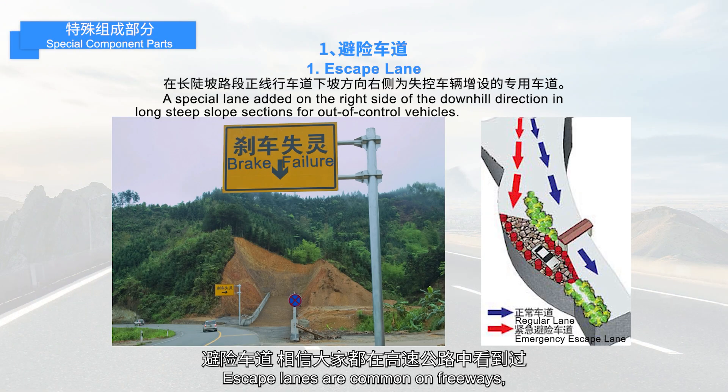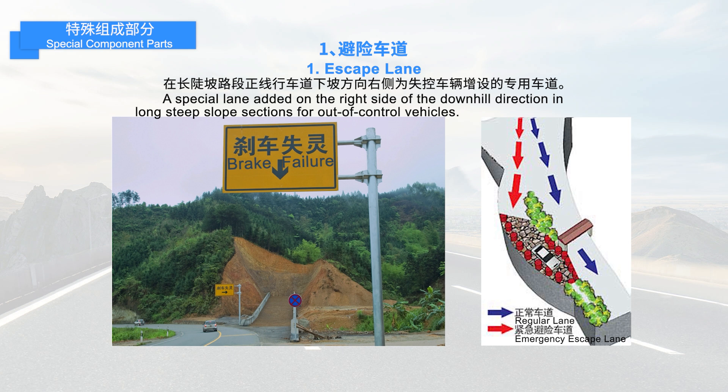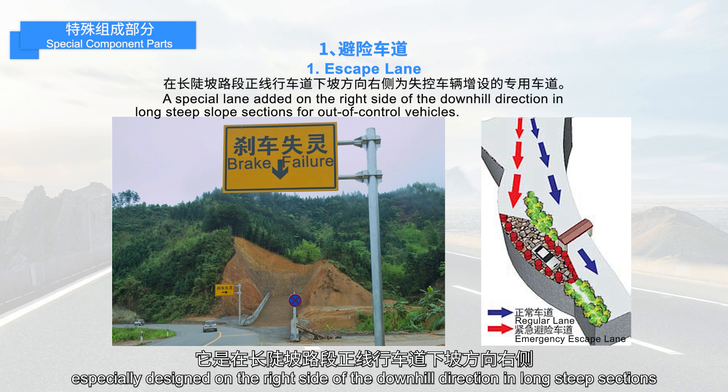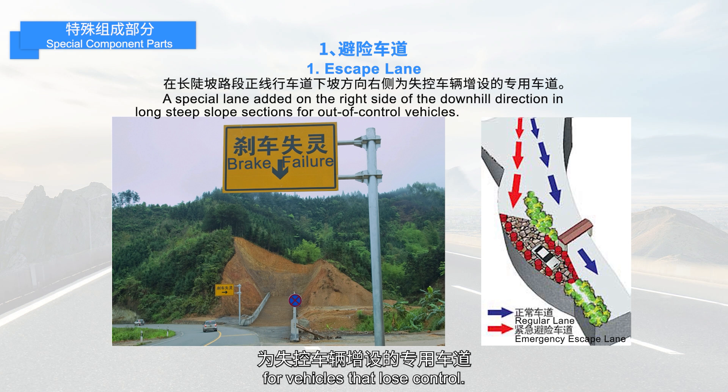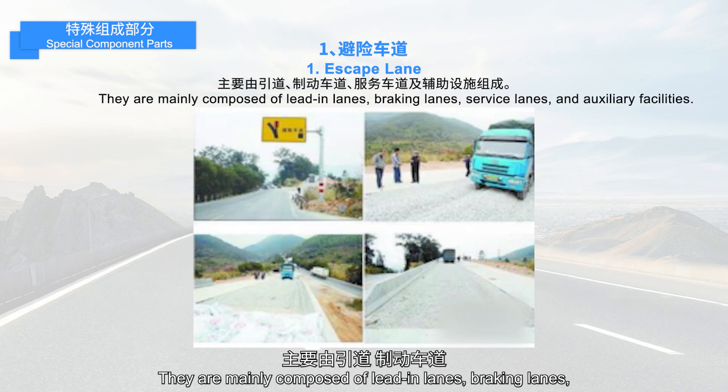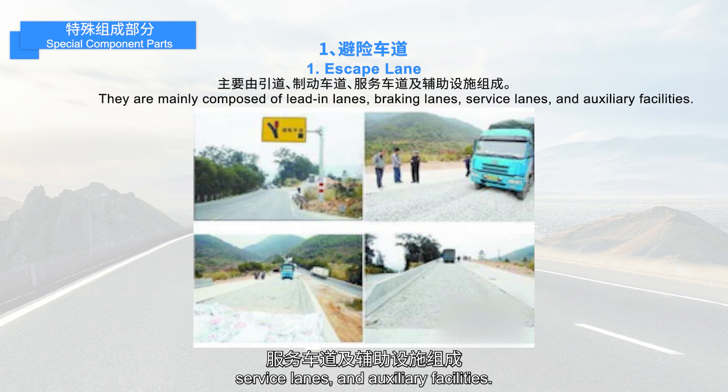Escape lanes are common on freeways, especially designed on the right side of the downhill direction in long steep sections for vehicles that lose control. They are mainly composed of leading lanes, braking lanes, service lanes, and auxiliary facilities.